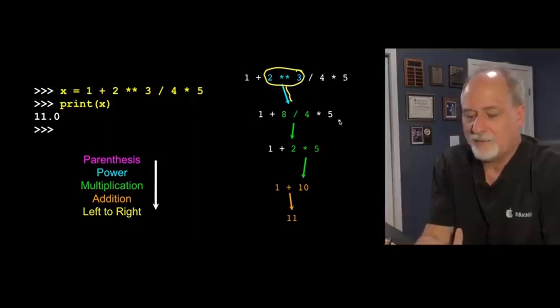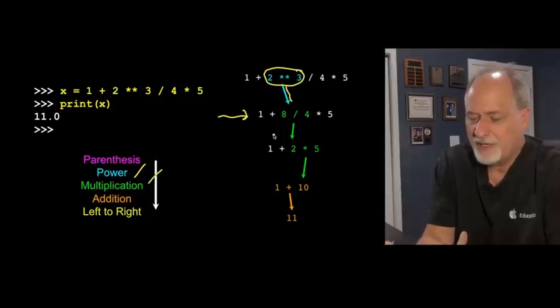Then I'd rewrite the whole thing with the 8 there. There is both multiplication and division, they're equal, at the same level, so they're done left to right. 8 divided by 4 happens before 4 times 5, so the fact that it's not 4 times 5, but instead 8 divided by 4, is because of the left to right rule. So then this gets rewritten to be 2, 1 plus 2 times 5.